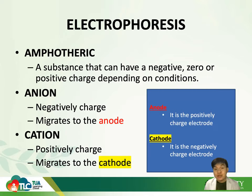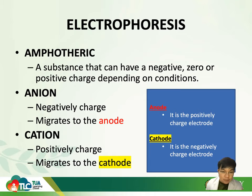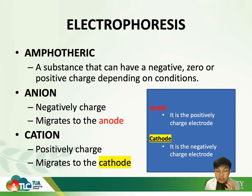An important thing to know first is that your analytes are ions with charge. If a particular molecule or substance has the ability to be both positively or negatively charged depending on the isoelectric point or the pH of a particular solution, we refer to them as amphoteric. Amphoteric substances can have either a negative charge, a zero charge, or a positive charge depending on the conditions — specifically your isoelectric point and your pH.